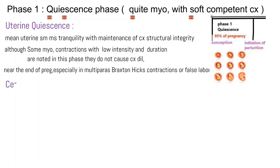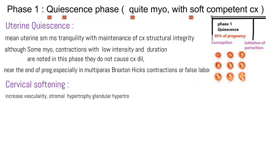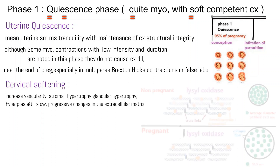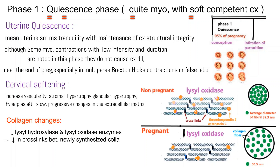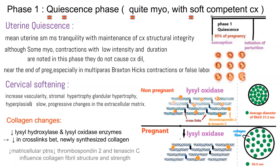Cervical softening results from increased vascularity, stromal hypertrophy, glandular hypertrophy and hyperplasia, and slow progressive changes in the extracellular matrix. Collagen changes include reduction in lysyl hydroxylase and lysyl oxidase enzymes, leading to reduced cross-links between newly synthesized collagen, and reduced expression of matricellular proteins thrombospondin-2 and tenascin-C, which influence collagen fibril structure and strength.